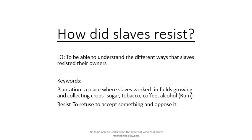The title for today's lesson is 'How Did Slaves Resist?' The lesson objective is to be able to understand the different ways that slaves resisted their owners. There are two keywords: 'plantation' and 'resist.' Please write out all of those things, making sure you are underlining your title.